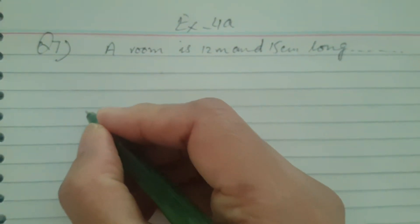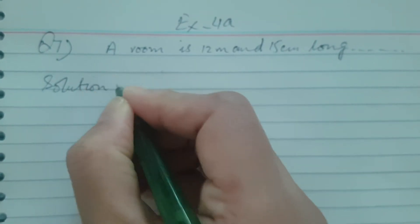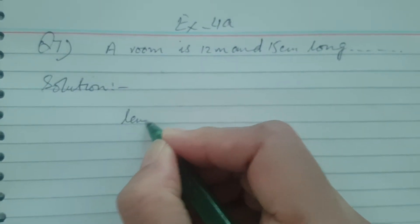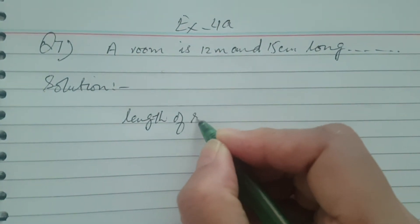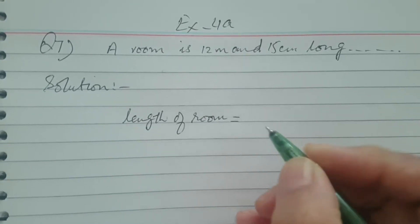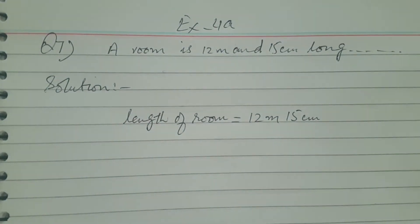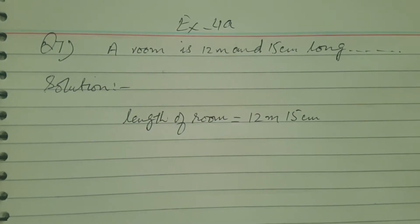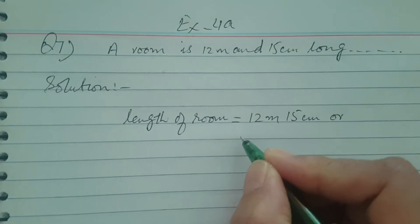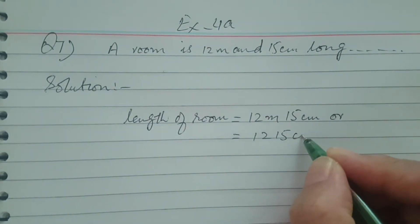Write down the statement of the question by yourself on your notebook and then we will solve it. This is the solution. Length of room is given 12 meter and 15 centimeter. The units are given in meter and centimeter. You must change the units into one unit, meter or centimeter. If we change our units into centimeters, we will have no decimal in it, so it will be easy for us to solve the question.